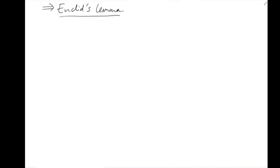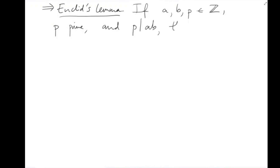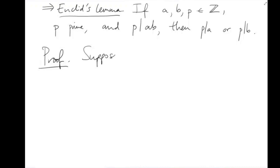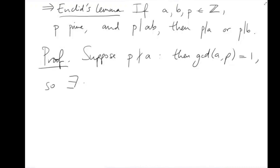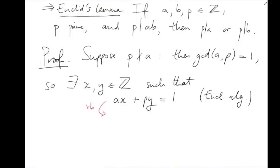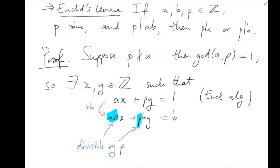This is important because it gives rise to Euclid's lemma. If A, B, and P are integers, P is prime, and P divides the product A times B, then either P must divide A or P must divide B. Suppose P doesn't divide A; we need to show P divides B. If P doesn't divide A, then gcd(P, A) is 1, so there exist integers x and y such that Ax plus Py equals 1, by Bézout's lemma. Multiplying by B: ABx plus PBy equals B. But AB is divisible by P and P is divisible by P, so all terms on the left are divisible by P, hence B must be divisible by P.